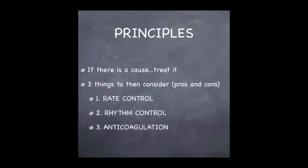Atrial fibrillation is exceedingly complex to manage, and the treatment protocol really depends on the age of the patient and other comorbidities. The most important principle: if there is a cause for the atrial fibrillation, treat it. Then consider three things — rate control, rhythm control, and anticoagulation — weighing the pros and cons of each.